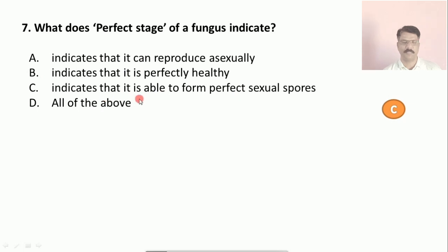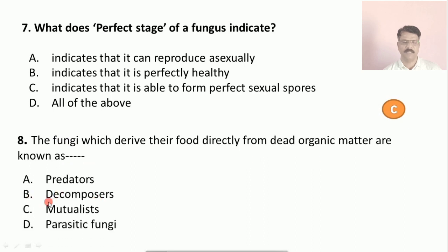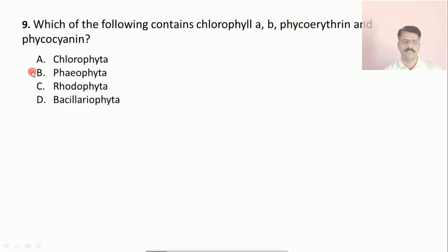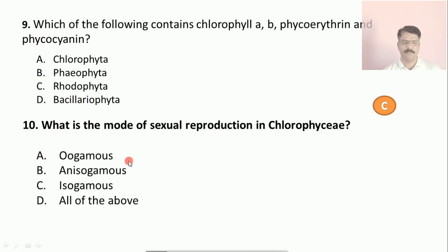Question number eight: fungi which derive their food directly from dead organic matter are known as? Options: (a) predators, (b) decomposers, (c) mutualists, (d) parasitic fungi. The correct answer is (b), decomposers. Question number nine: which of the following contains chlorophyll a, phycoerythrin and phycocyanin? Options: (a) Chlorophyta, (b) Phaeophyta, (c) Rhodophyta, (d) Bacillariophyta. The correct answer is (c), Rhodophyta. Question number ten: what is the mode of sexual reproduction in Chlorophyta? Options: (a) oogamous, (b) anisogamous, (c) isogamous, (d) all of the above. The correct answer is (d), all of the above.